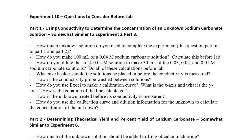In part one there are some questions to consider before lab. You're going to make a calibration curve, determine the concentration of the sodium carbonate solution using the calibration curve, then use that sodium carbonate solution mixed with calcium chloride to isolate calcium carbonate in part two. You'll determine the theoretical yield and percentage yield of that reaction. Here are some things you should be able to do before you come to lab.